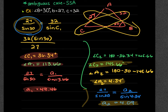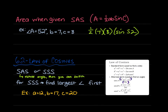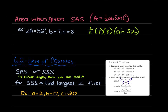Everybody good on Law of Sines? And then we did side-angle-side with Law of Cosines. For the area formula, don't forget it's sine, not cosine. If it's side-angle-side, it's sine — so that should have been 0.5 times 7 times 8 times the sine of 52, giving an area of 22.06. For Law of Cosines, remember the parentheses are important, and you want to start with the largest angle.